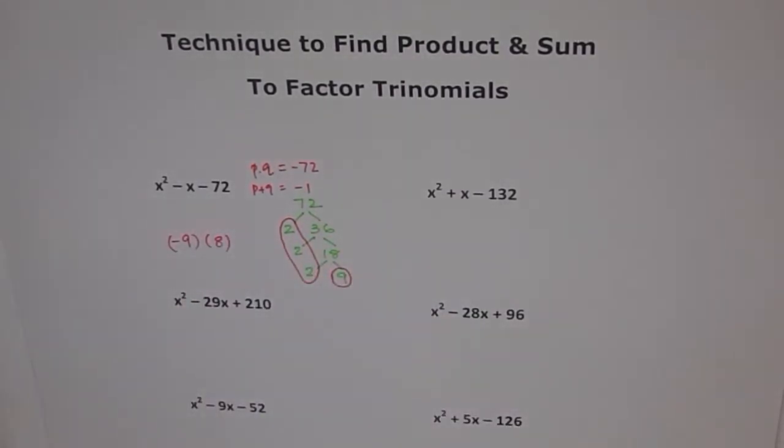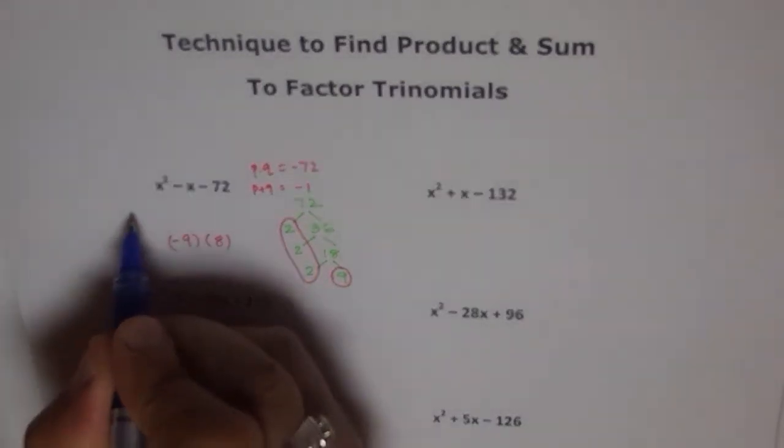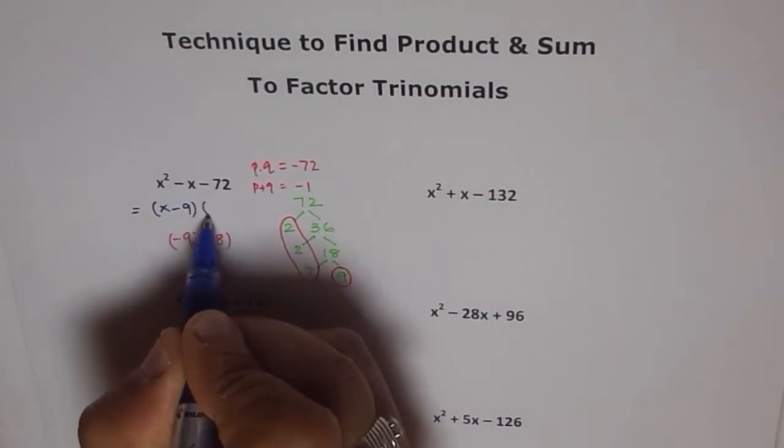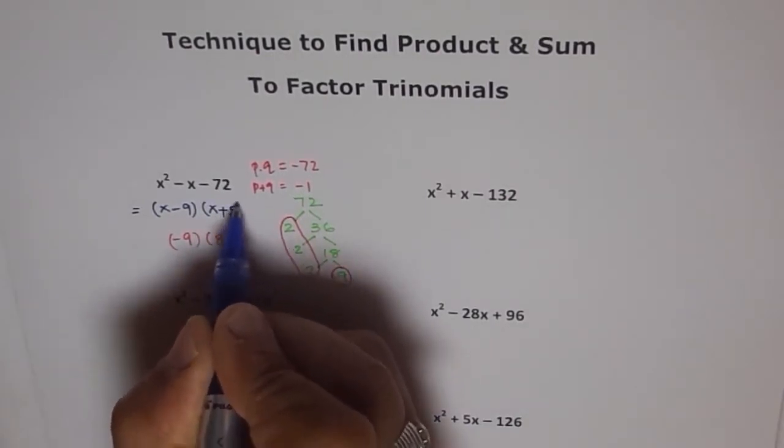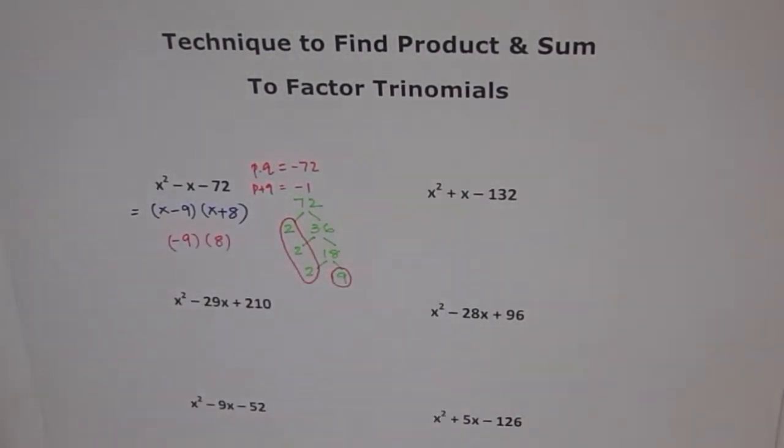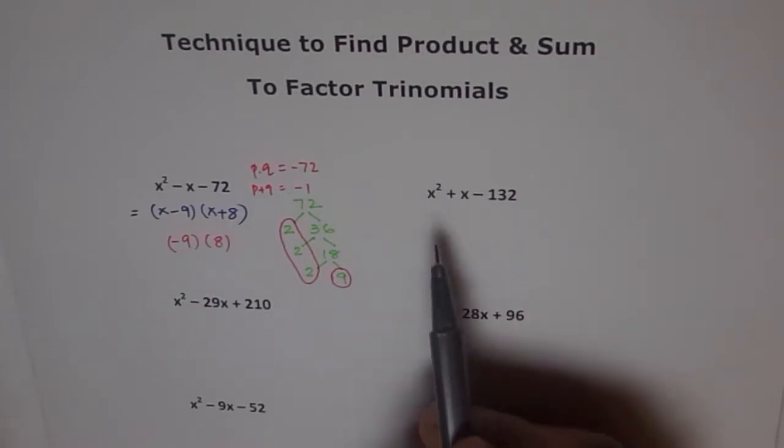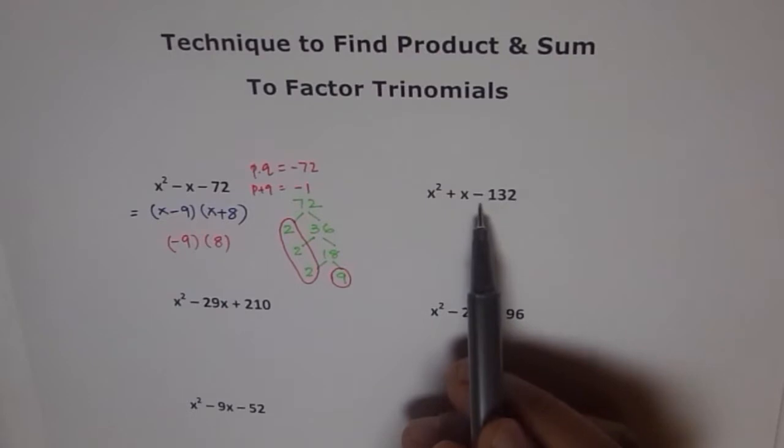And of course when I want negative as my sum, this number should be negative and that number should be positive. Now after doing this we know the 2 magic numbers are negative 9 and 8. So therefore we can factor and we can write this is equal to x minus 9 times x plus 8. You understand the process? So this is how we kind of factor it. Let me show you with another set of trinomial.